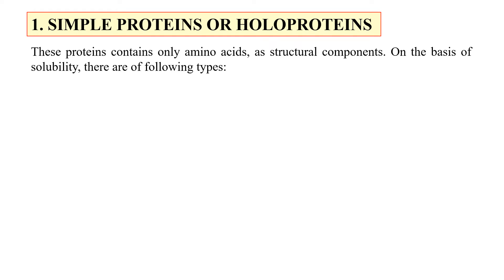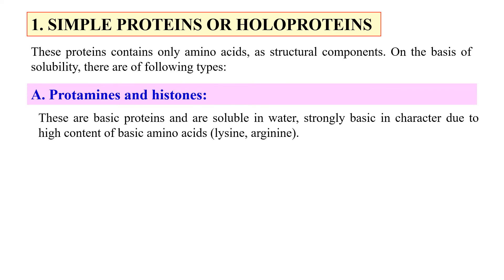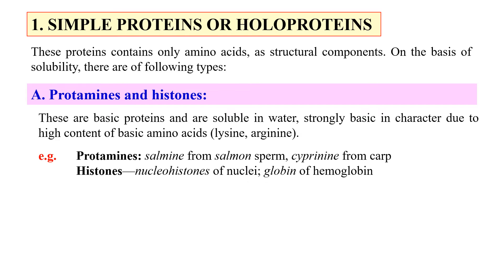On the basis of solubility, simple proteins are of the following types. First, protamines and histones — these are basic proteins and soluble in water. They are strongly basic in character due to their high content of basic amino acids, that is lysine and arginine. They also form salts with mineral acids and nucleic proteins. Examples include salmine from salmon sperm, and histones such as nucleohistones and nucleoglobin of hemoglobin.